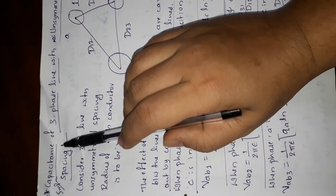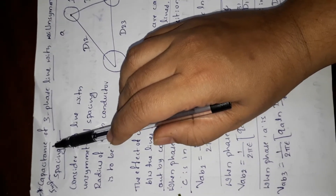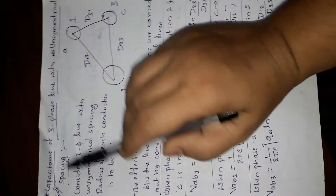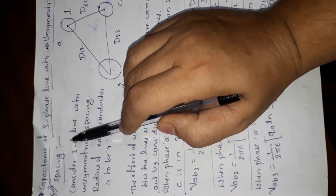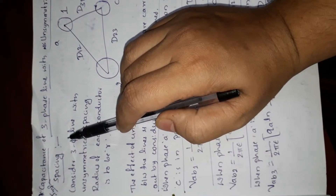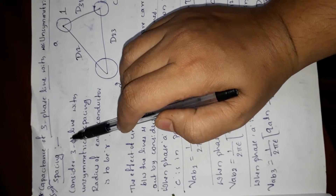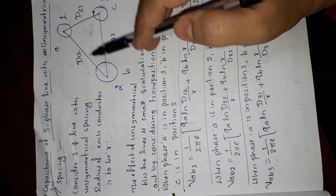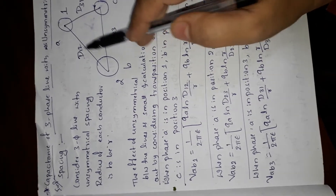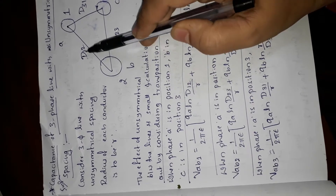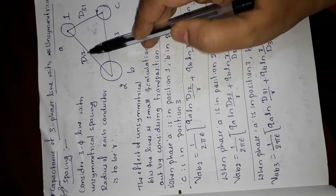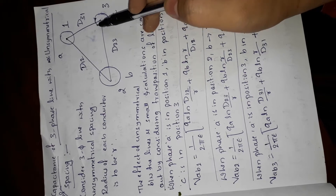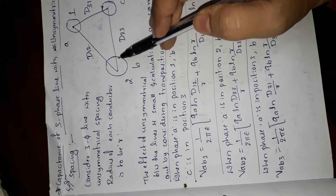Let's have a discussion on the important topic of capacitance of a three-phase line with unsymmetrical spacing. Previously we discussed symmetrical spacing; here we are going to discuss unsymmetrical spacing. Consider a three-phase line with unsymmetrical spacing where between conductor a and b the distance is d12, between b and c it is d23, and between c and a it is d31 — all unequal distances.